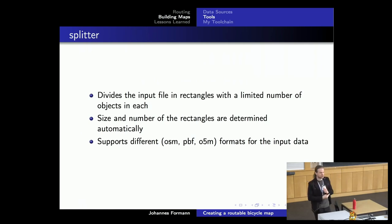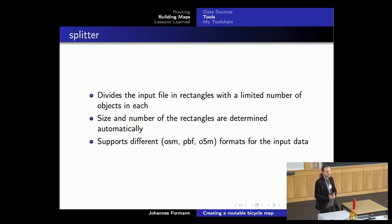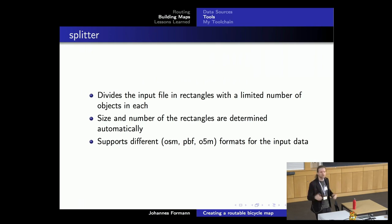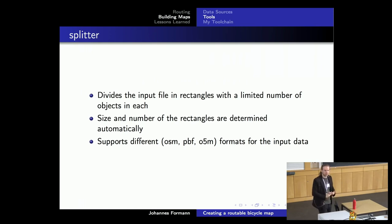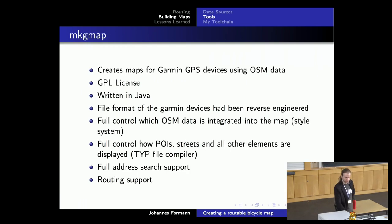There's another small tool called the Splitter. It divides the input file into rectangular tiles with no overlap and a limited number of objects in each output file. This is needed because Garmin devices don't like it when their map tiles get too large. The splitter automatically determines the rectangle sizes - currently about 400,000 objects per tile. These output files are then processed by MKGMap.